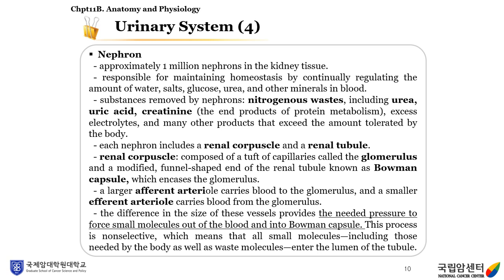Each nephron includes a renal capsule and a renal tubule. The renal capsule is composed of a tuft of capillaries called the glomerulus and the modified funnel-shaped end of the renal tubule, known as Bowman's capsule, which encases the glomerulus. A larger afferent arteriole carries blood to the glomerulus, and a smaller efferent arteriole carries blood from the glomerulus. The difference in the size of these vessels provides the pressure needed to force small molecules out of the blood and into Bowman's capsule. This process is non-selective, meaning all small molecules—including those needed by the body as well as waste molecules—enter the lumen of the tubule.